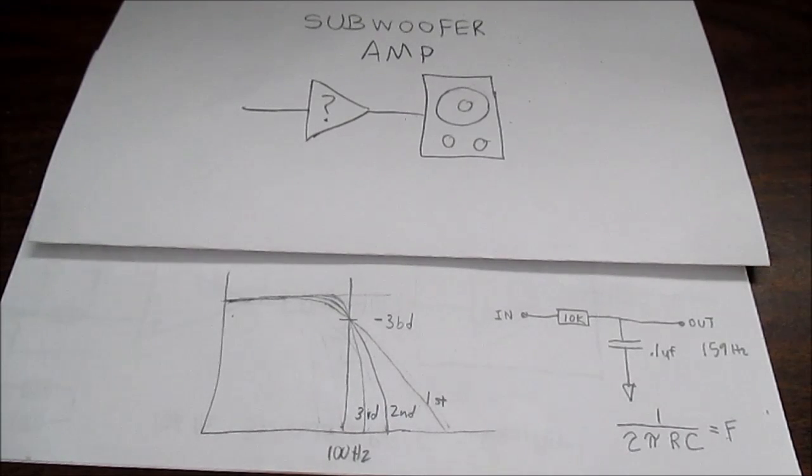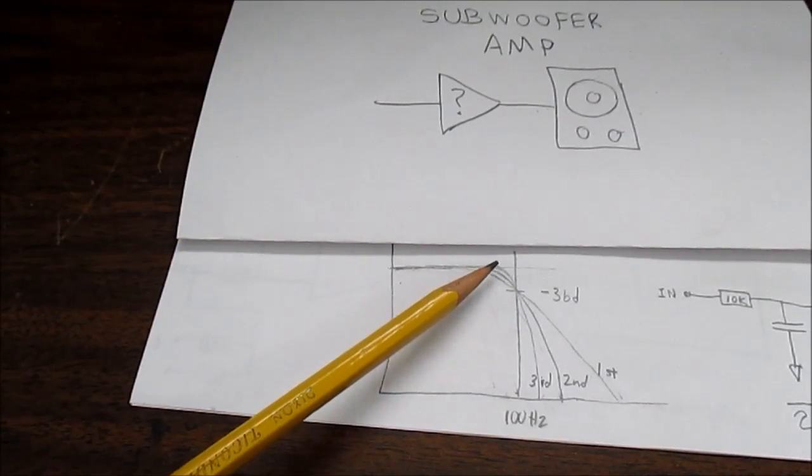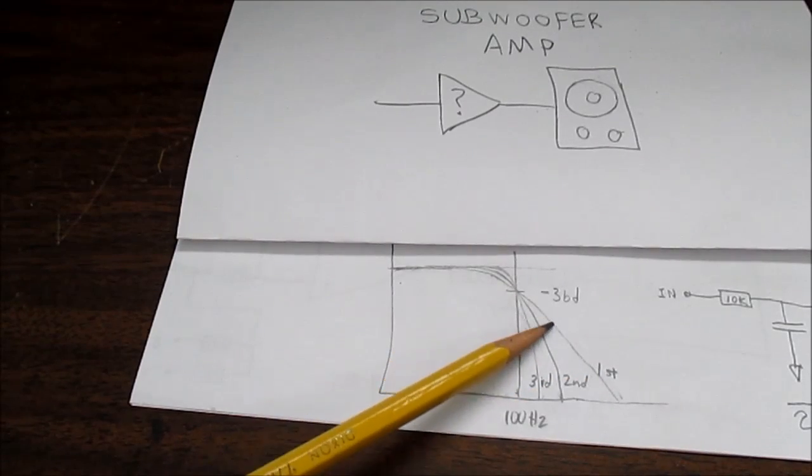Well, for a subwoofer type system, that is too slow of drop off. And I'm showing a chart here. So, we have a 6 dB first order filter. It's too slow of drop off.